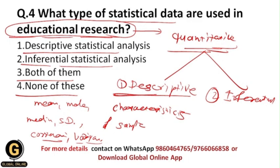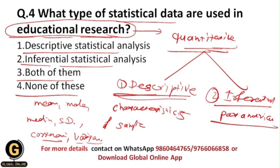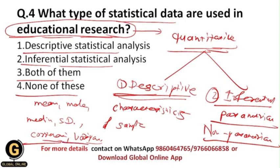The correct answer is option 3 — both of them — because in educational research we can use both descriptive statistical analysis and inferential statistical analysis. We will cover parametric and non-parametric tests, as well as mean, mode, median, standard deviation, correlation, and variance in upcoming videos.